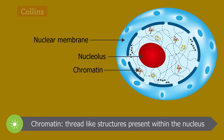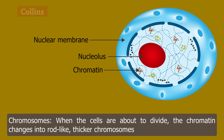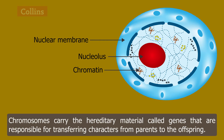The nucleus also contains thread-like structures called chromatin. When the cells are about to divide, the chromatin changes into rod-like, thicker structures called chromosomes. Chromosomes carry the hereditary material called genes that are responsible for transferring characters from parents to the offspring.